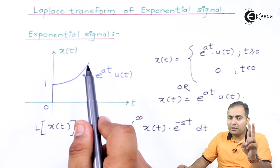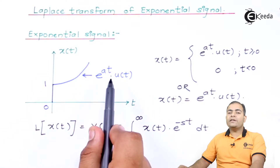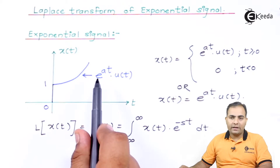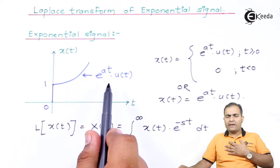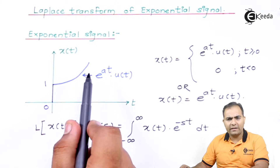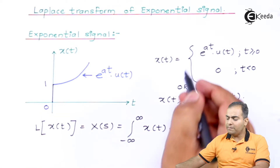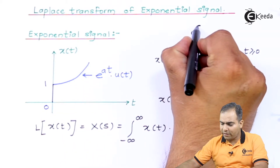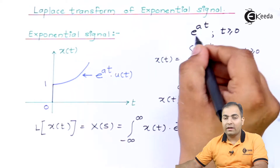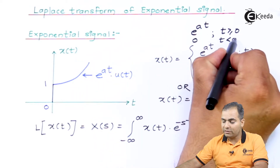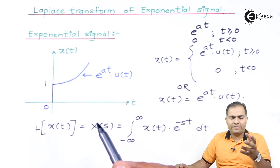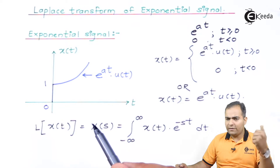I have multiplied e to the power at by the unit step function. The reason is the unit step is always a causal signal. If I don't want to multiply by u(t), another way to express the exponential function for a right-handed signal is to write e to the power at, available only when t ≥ 0, and with amplitude 0 when t < 0.